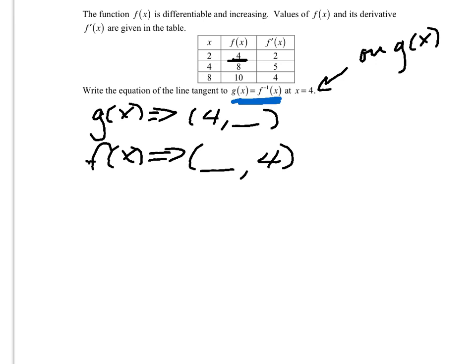So what I'm dealing with is actually the ordered pair 2, 4, which means that on g of x I have the point 4, 2.